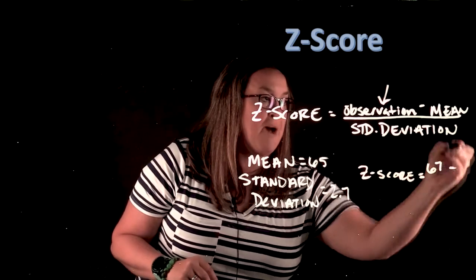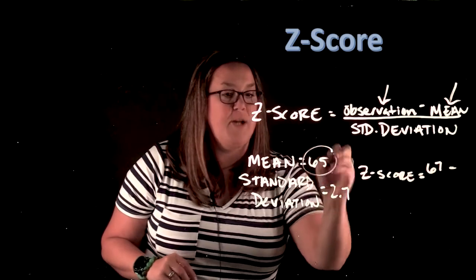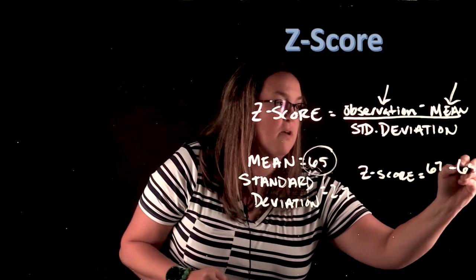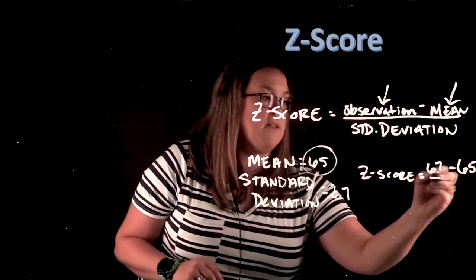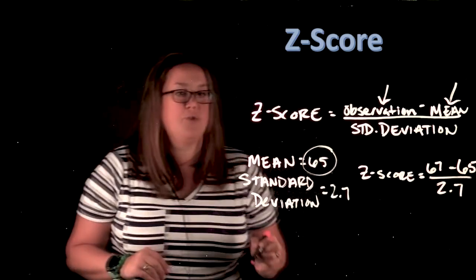minus the mean, which we said was 65, and I'm going to divide by standard deviation, which is 2.7. So when I calculate my z-score, I come up with 0.74.